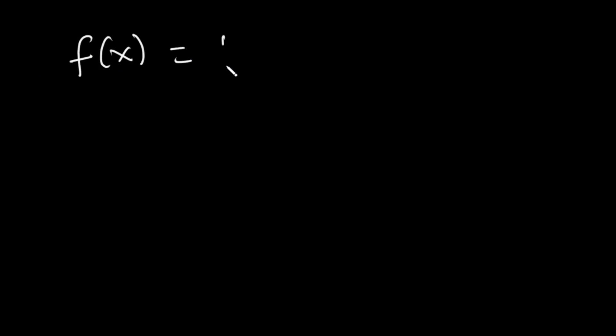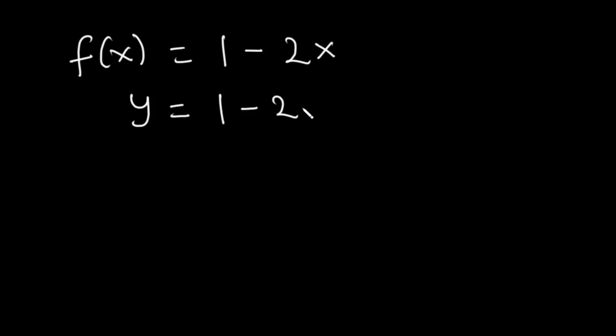So now, how do we find the range of a function, say f of x is equal to 1 minus 2x? To find the range of a function, we need to represent f of x with y. So f of x, which is equal to 1 minus 2x, becomes y is equal to 1 minus 2x.